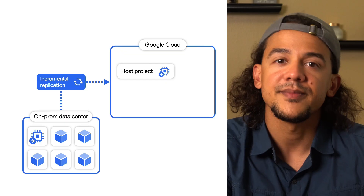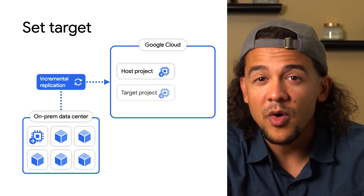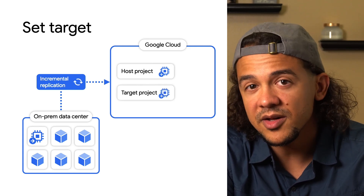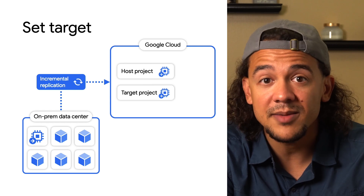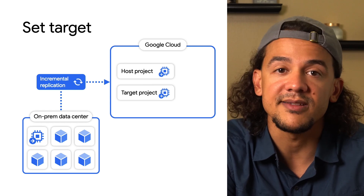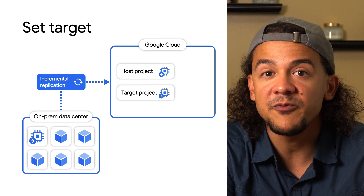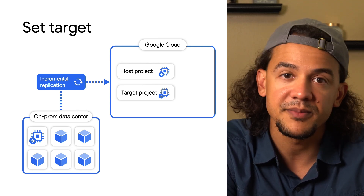As replication continues, you move on to phase three: setting your target. This is when you specify your landing zone — where you want your VM to migrate to. The target details include the project, instance type, and network settings. You don't have to create a Compute Instance yourself because Migrate for Compute Engine will take care of doing that for you.